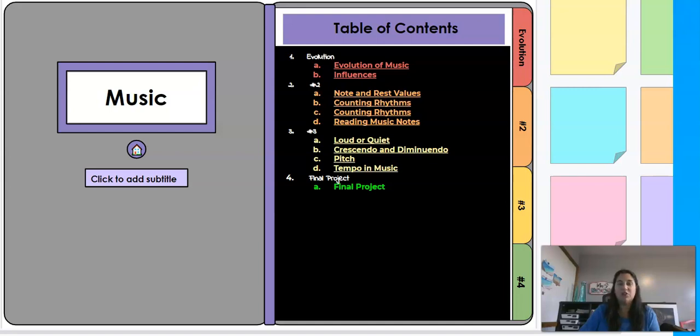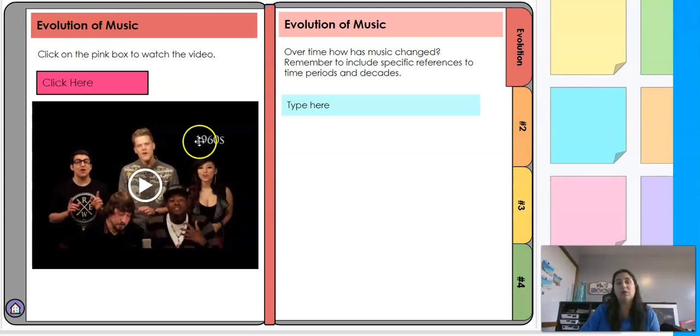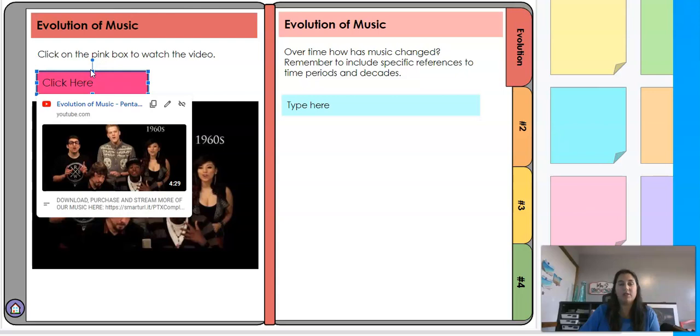My elements and evolution of music activity is an interactive independent style activity that students can do whether they are online or in school. Videos are embedded and put into clickable pink boxes if you wish to embed them.